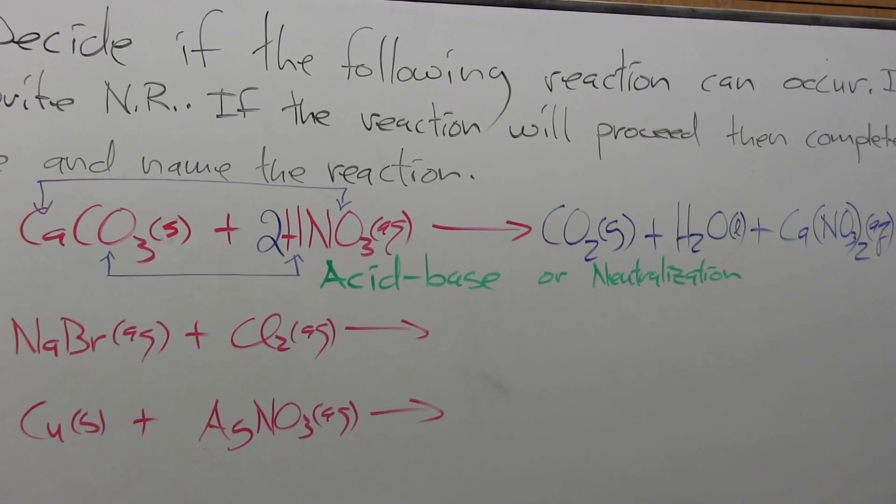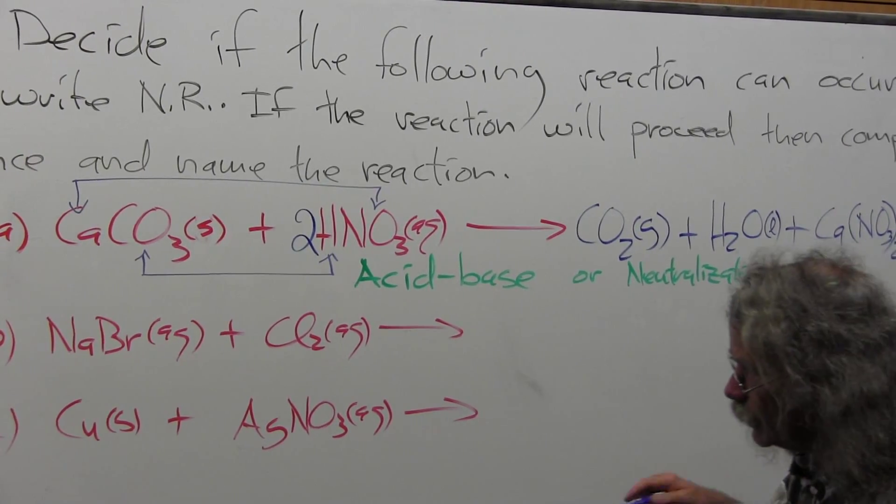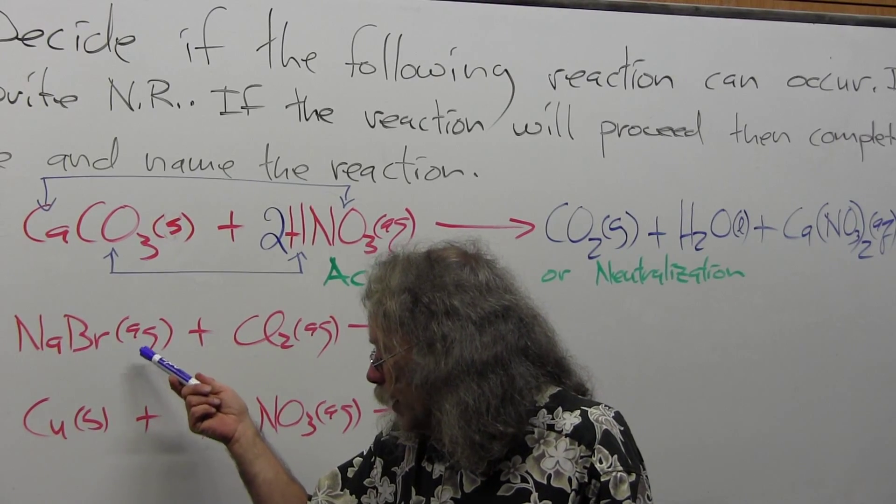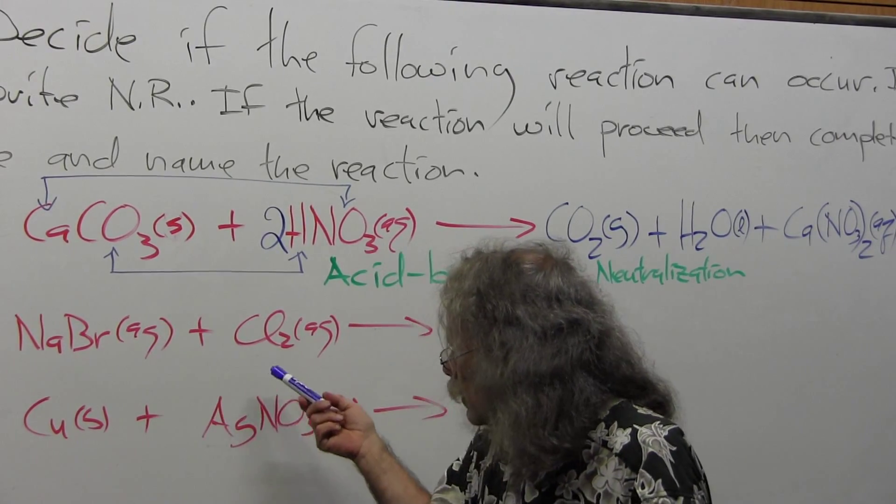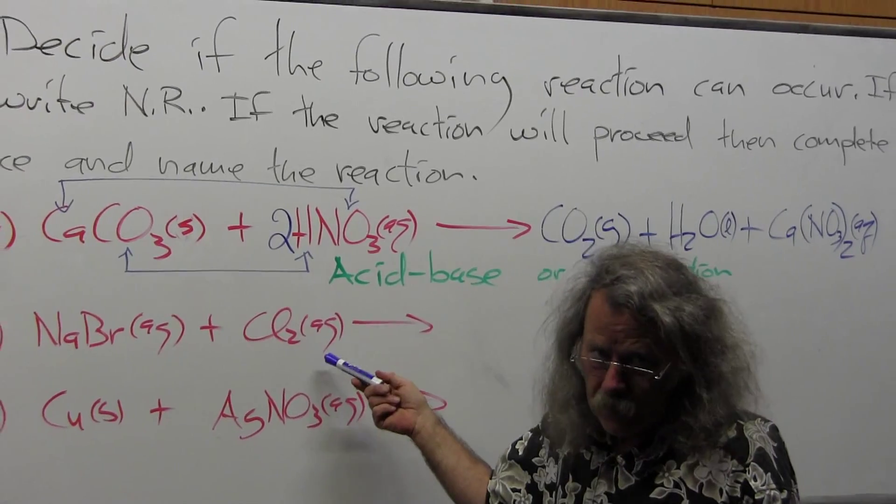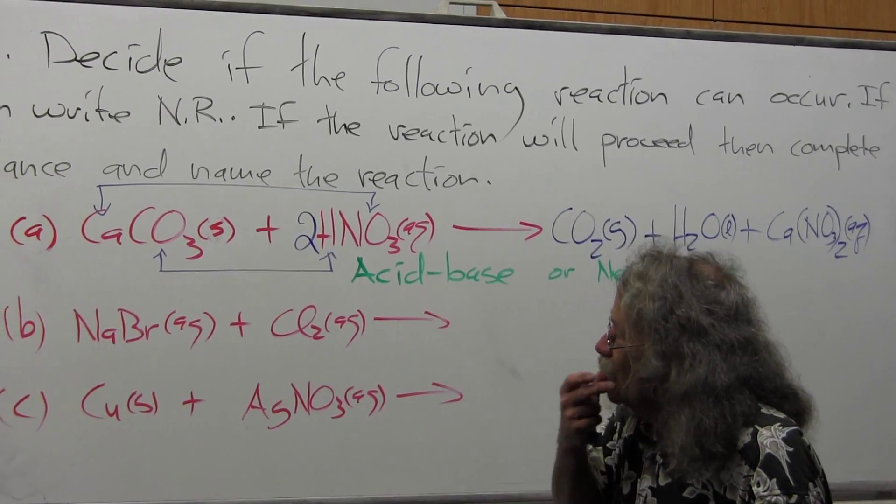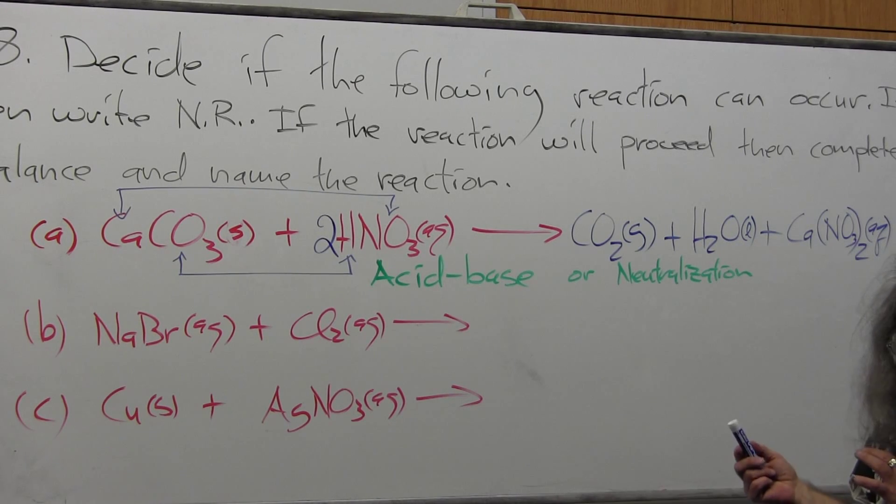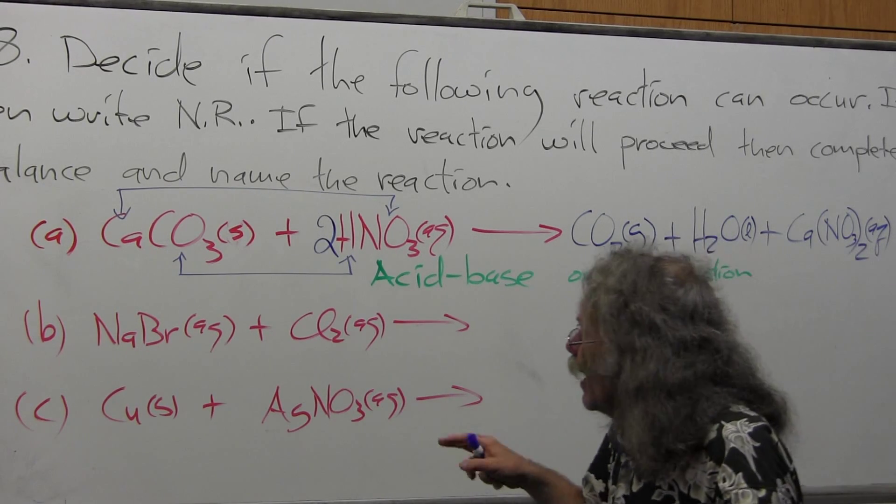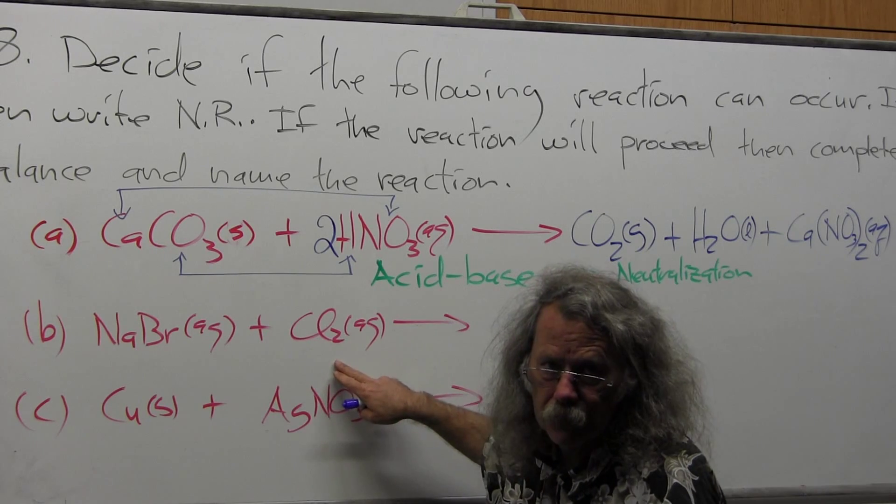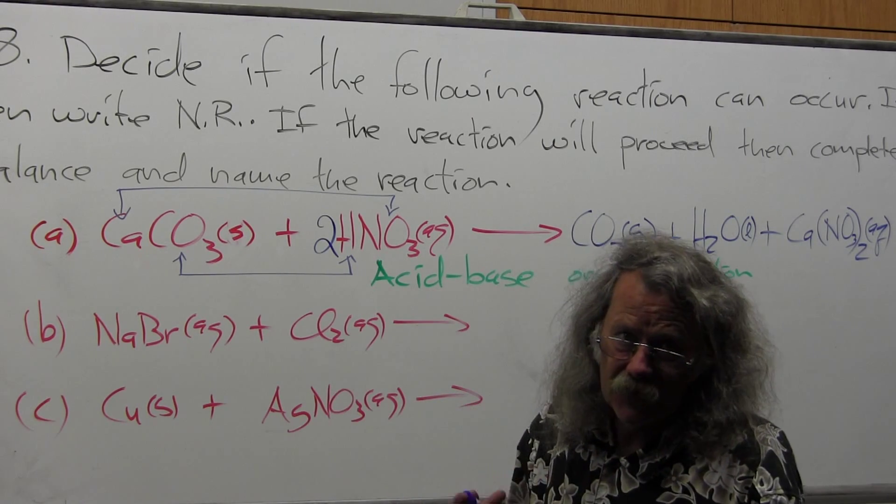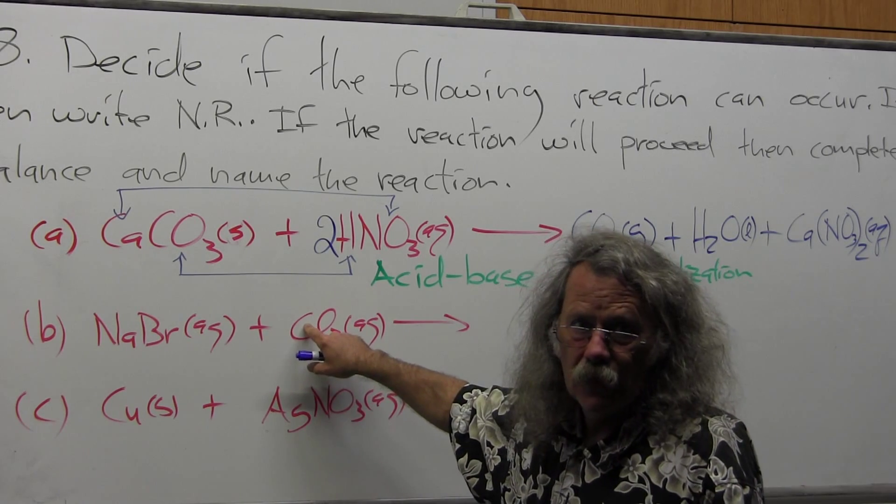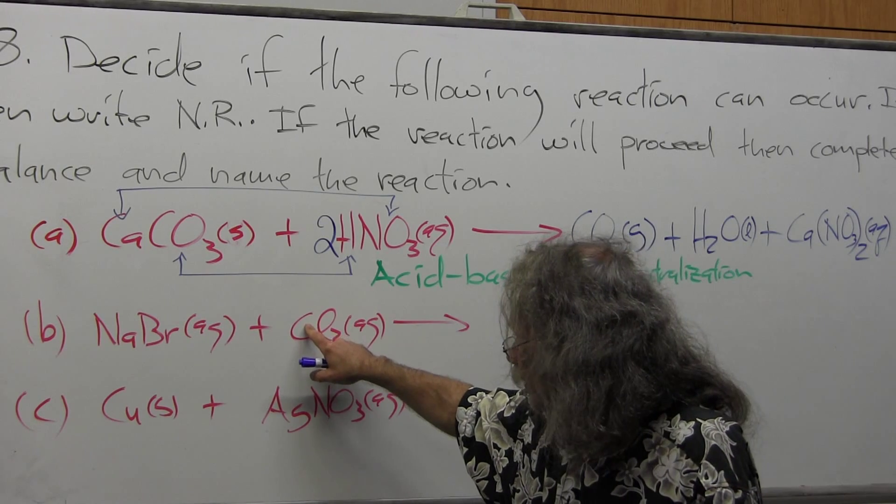Now, we have option B, or problem B, where we have sodium bromide aqueous plus molecular chlorine, again, aqueous. We're going to have to look into this one a little differently than we did the previous one because I don't have a salt here. This is molecular chlorine. And it's also one of the tells that it's possibly a redox reaction because I have something in its zero oxidation state as it occurs in nature.